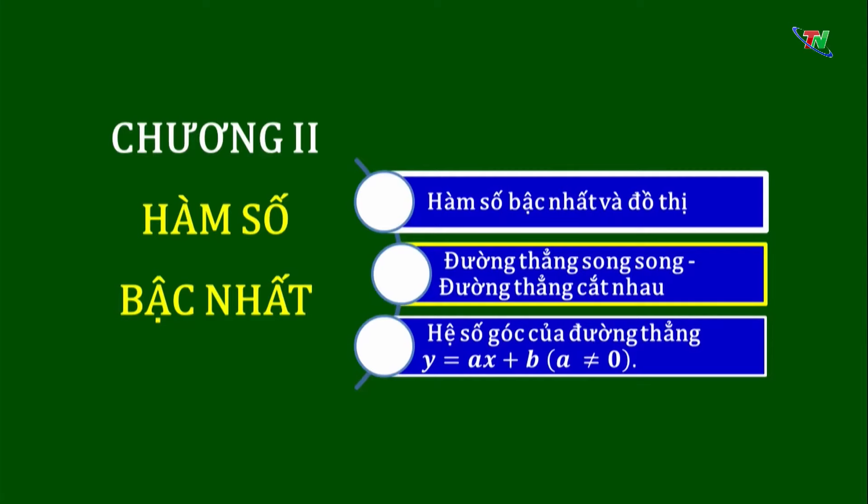Hôm nay, hãy cùng các em tiếp tục ôn tập chủ đề hàm số bậc nhất thuộc môn đại số lớp 9. Ở tiết học trước, chúng ta đã ôn tập phần 1: hàm số bậc nhất và đồ thị. Ngày hôm nay, chúng ta ôn tập phần 2: đường thẳng song song, đường thẳng cắt nhau.